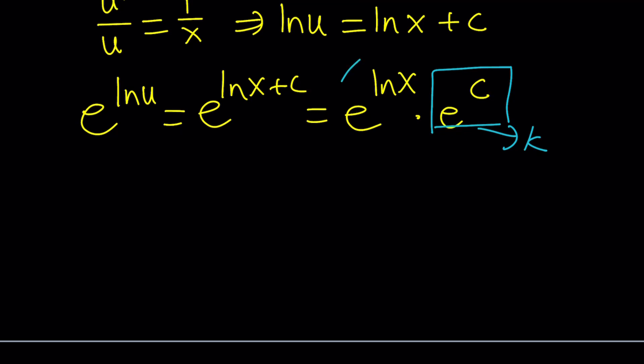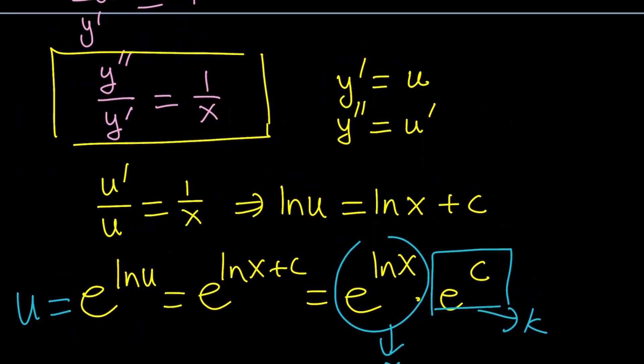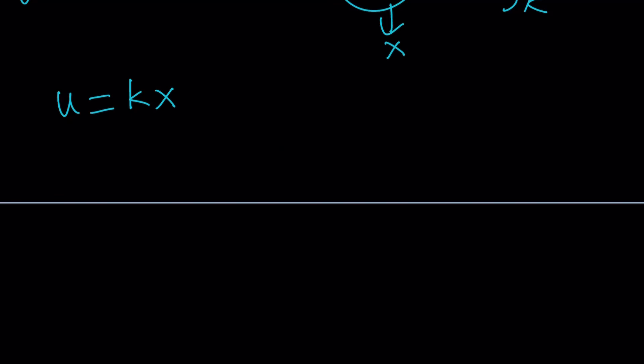e to the power of ln x is x by definition, because e to the x and ln x are inverse functions. So, from here, we're getting u, which is e to the ln u, equals kx. It's that simple. But what is u? u is y prime. So, we're going to now back substitute, replace u with y prime. That's going to give you y prime equals kx.